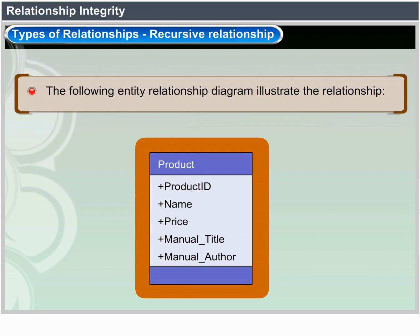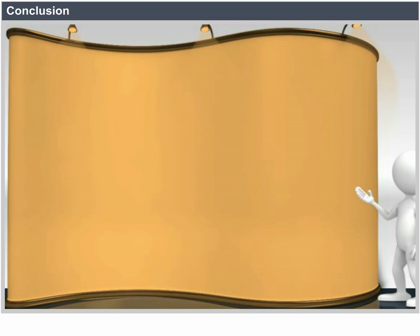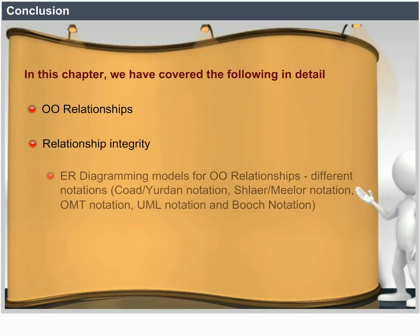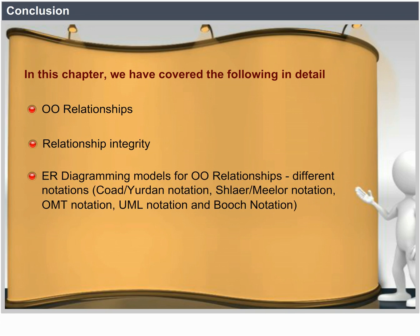In this chapter we have covered in detail: object-oriented relationships, relationship integrity, ER diagramming models for object-oriented relationships, and different notations including Goed-Udon notation, Schlar-Milor notation, OMT notation, UML notation, and Booch notation, as well as integrating objects into a relational database.